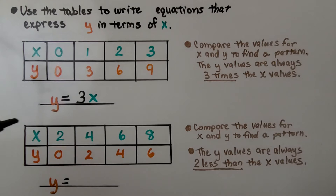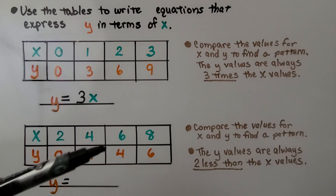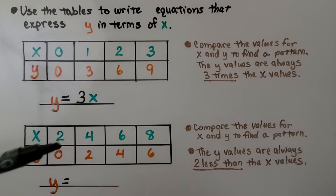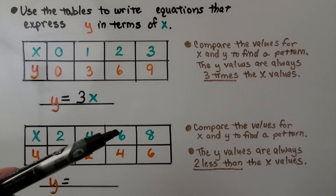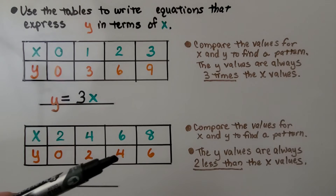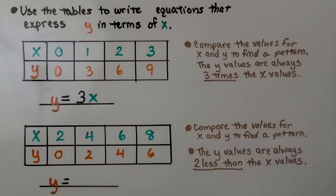For the next table, we compare x and y values and look for a pattern. x is 2 and y is 0; x is greater than y throughout the table. We have x of 4 and y of 2, then x of 6 and y of 4. The y values are always 2 less than the x values. So we write the equation: y is equal to x minus 2.